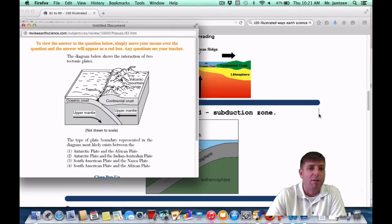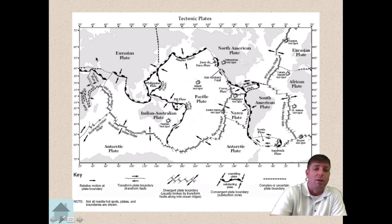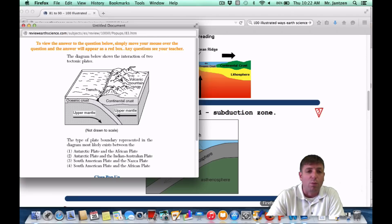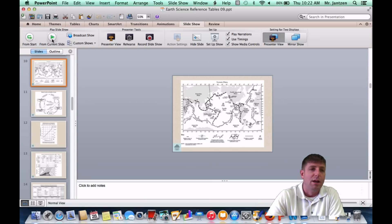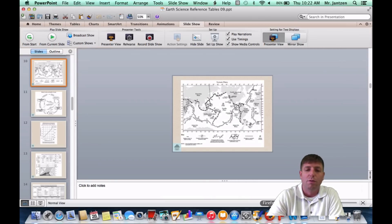As a regents question, it says, diagram below shows the interaction of two tectonic plates. The type of plate boundary represented in the diagram most likely exists between which? So once again, you're going to use your reference tables for this. You're going to come and you're going to check all four of these, all four plate boundaries. And you're basically going to come, so once again, you come to your reference tables, you come to the slide, you're going to check each plate boundary. You're going to see where the block diagrams exist. So you want to know exactly where the block one exists. And it's going to be choice three, South America plate and NASCA plate, right there. Or on your reference tables, once again, South America plate and NASCA plate right here.